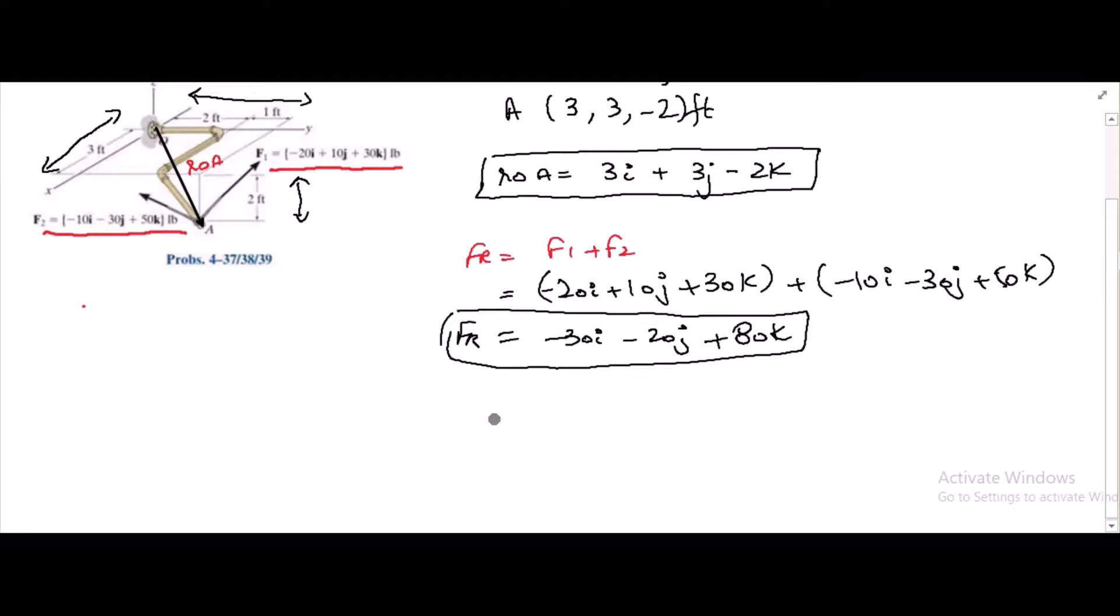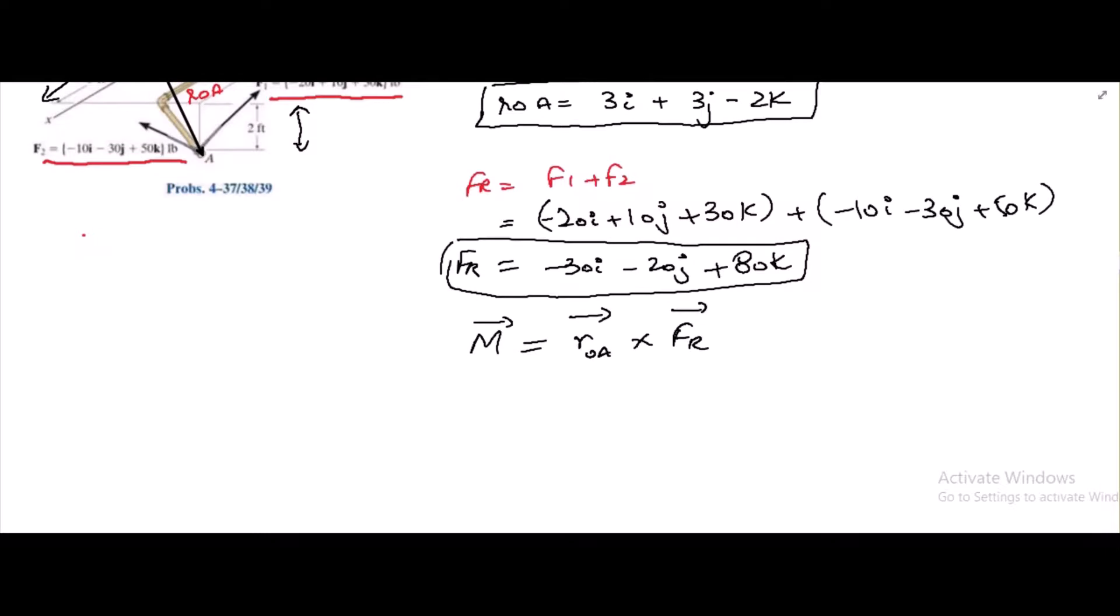We know that the moment is the cross product between the moment arm ROA and the force vector. In this case it is FR and we can also write it as determinant i j k, and then ROA is 3, 3, negative 2 and negative 30, negative 20 and 80.